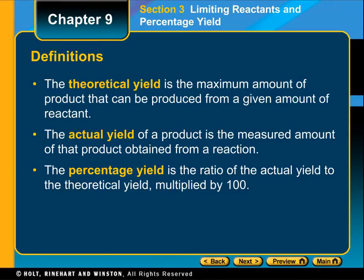You're going to be using words like theoretical yield, which is the maximum amount of a product that you could make; the actual yield, which is the amount of product that's actually made; and then finding a percent yield, which is the ratio of the actual to the theoretical times 100.